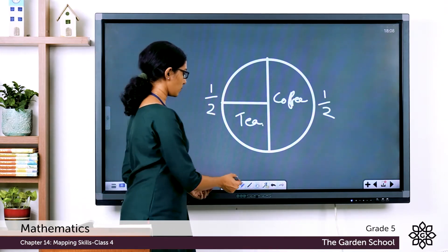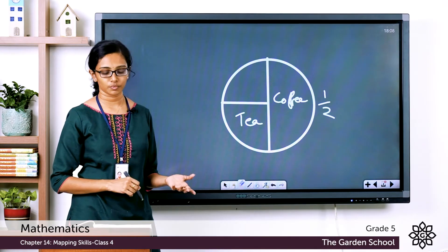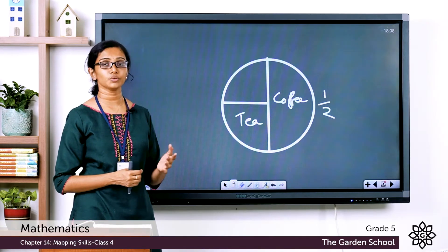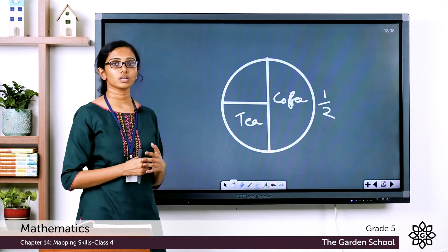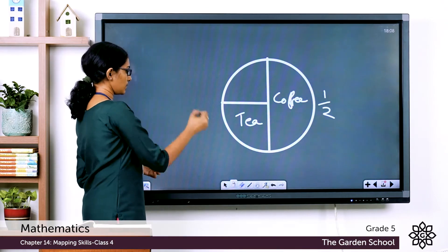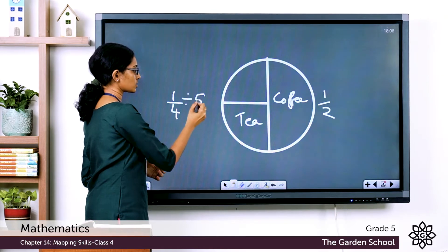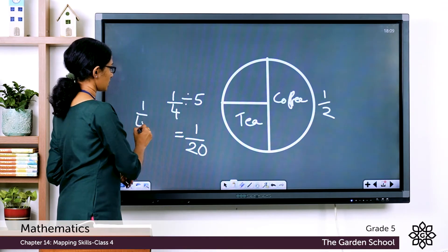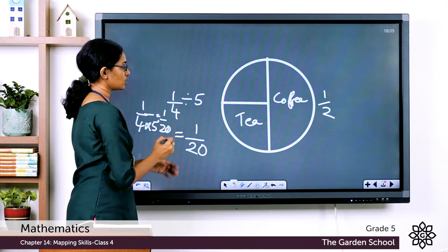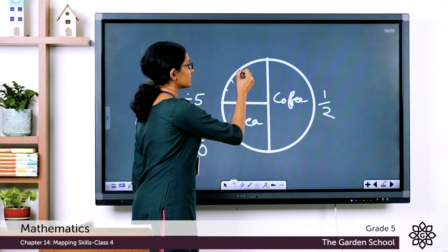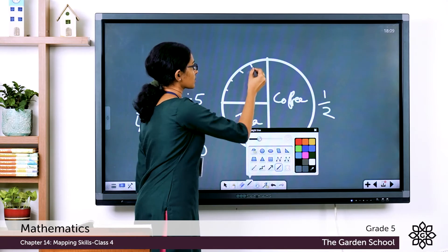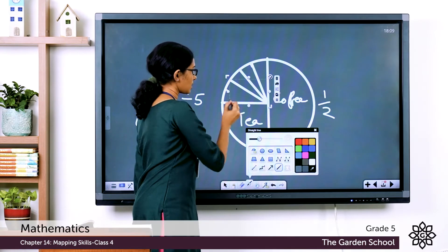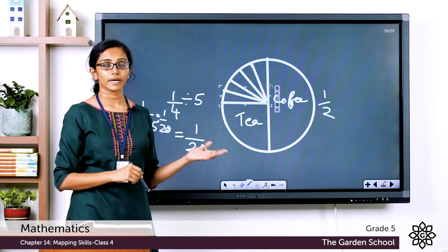We are left with the other 1/4. In this quarter we represent hot chocolate, milk, and shake. Hot chocolate is 1/20. If we divide 1/4 into five equal sectors, each sector will be 1/4 ÷ 5 = 1/20. So divide this quarter into five equal sectors and draw lines connecting those points to the center. Each sector represents 1/20.